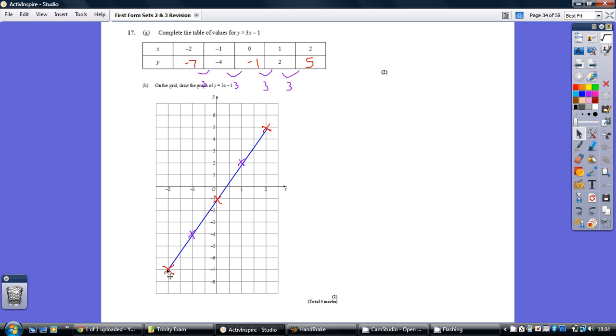Get your ruler out and draw in the straight line, and you can now go and fill in these other values from your straight line. So when x is minus 2, here's minus 2, y is minus 7. When x is 0, so nothing along the corridor, we're 1 down the stairs. When x is 2, we are 5 up.